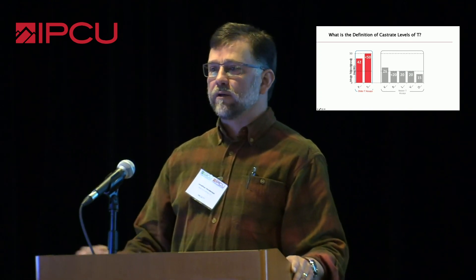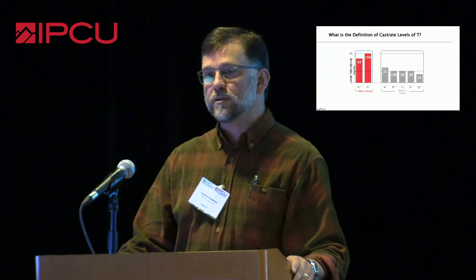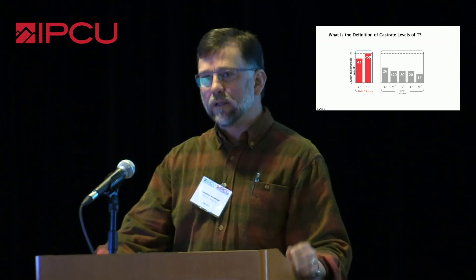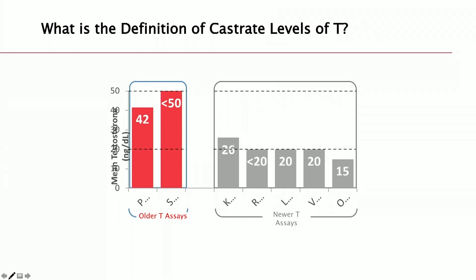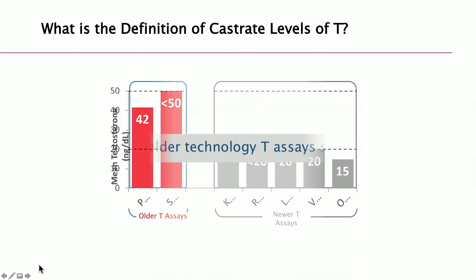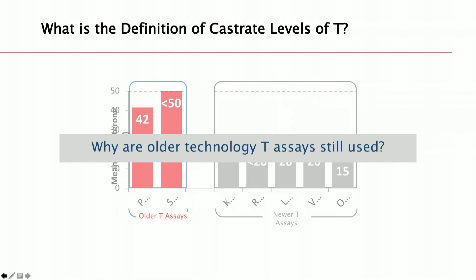What is the definition of castrate levels of testosterone? If you look back at older studies that used dual isotope methods of detecting levels of testosterone, 50 was the cutoff because that was the capability of technology at the time. However, going into the 90s and beyond, when mass spec was widely available, 20 was used as the cutoff. The question is: why are we still using older technology assays and the older technology definition in our science?